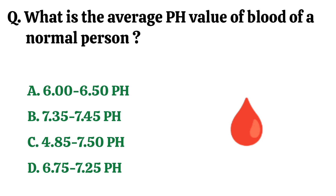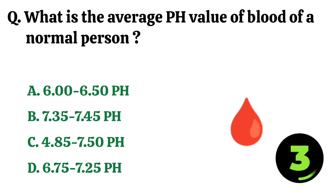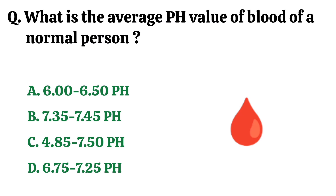What is the average pH value of blood of a normal person? The correct answer is option B. 7.35 to 7.45 pH.